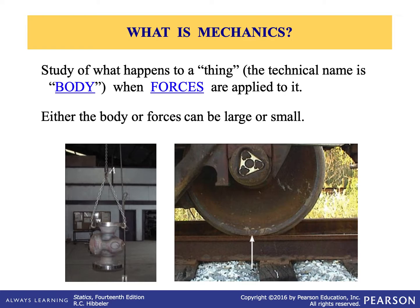So what kind of idealizations are we going to use? First, particles — objects that have a mass but a size that is very negligible. We also have another assumption, which is a rigid body, meaning bodies whose shape does not change when a load is applied. The last idealization we're going to use in this course is concentrated forces. Going back to the train example, we have a force that's concentrated, representing the effect of loading assumed to act on a point of the body, provided the area over which the load is applied is very small compared to the size of the body.